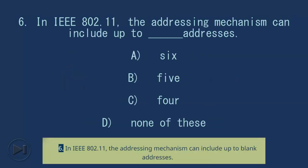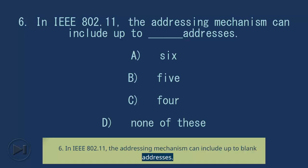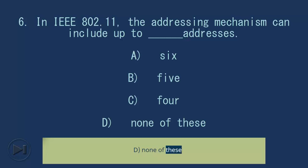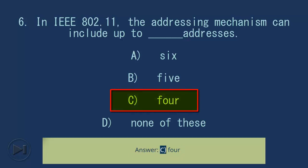Question 6: In IEEE 802.11, the addressing mechanism can include up to blank addresses. A. 6, B. 5, C. 4, D. None of these. Answer: C. 4.